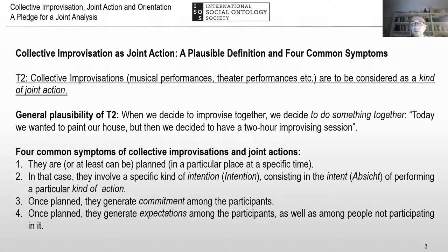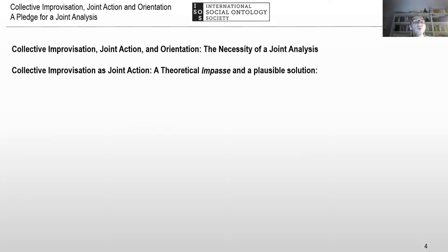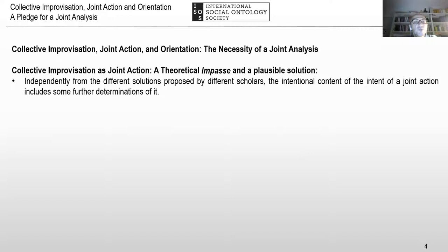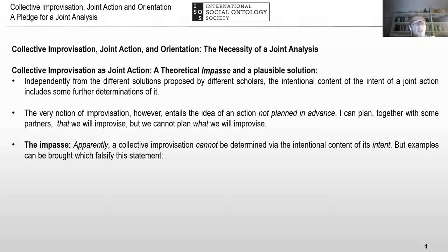Now we have seen the two couples, and we want to examine the necessity of a joint analysis of all three notions together. Collective improvisation as joint action presents a theoretical impasse and a possible solution. Independent from the different solutions proposed by different scholars, the intentional content of the intent of joint action includes some determinations of it — a point common to very different accounts, such as those of Tuomela-Gilbert or Searle. The very notion of improvisation, however, implies the idea of an action not planned in advance. I can plan together with partners that we will improvise, but we cannot plan what we will improvise — that is the impasse.